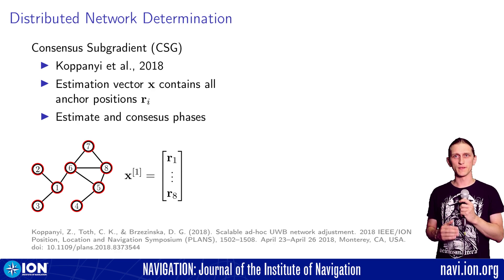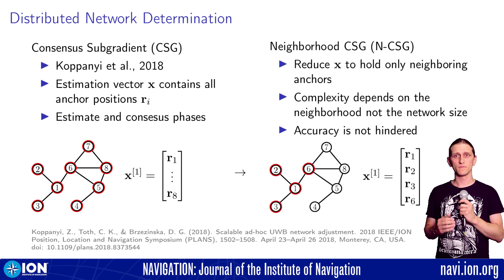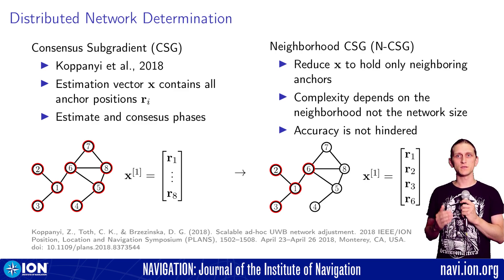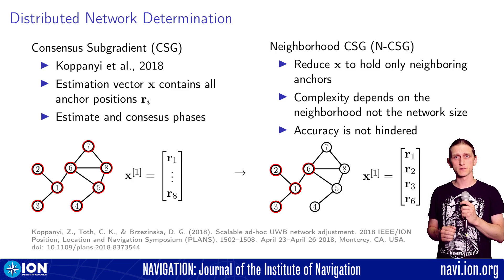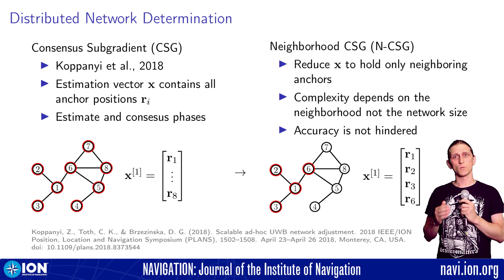The algorithm, however, does not scale well since the estimation vector contains positions of all the anchors, and such information is not really necessary. In our paper, we propose a dimension reduction modification, the neighborhood CSG, so that each anchor estimates only the position of itself and its neighbors. This solves the issue of scaling as the algorithm complexity depends only on the size of the neighborhood instead of the whole network, while maintaining the positioning accuracy.